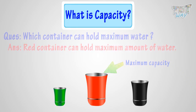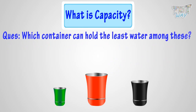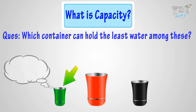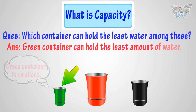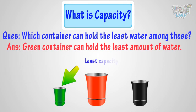Now, which container can hold the least water among these? The green container is smallest, so it can hold the least amount of water. So, the green container has the least capacity among all the containers. Now, kids, you know what is capacity.